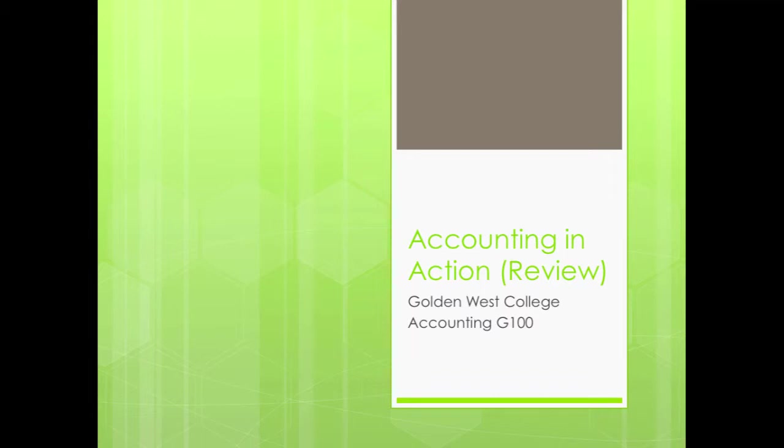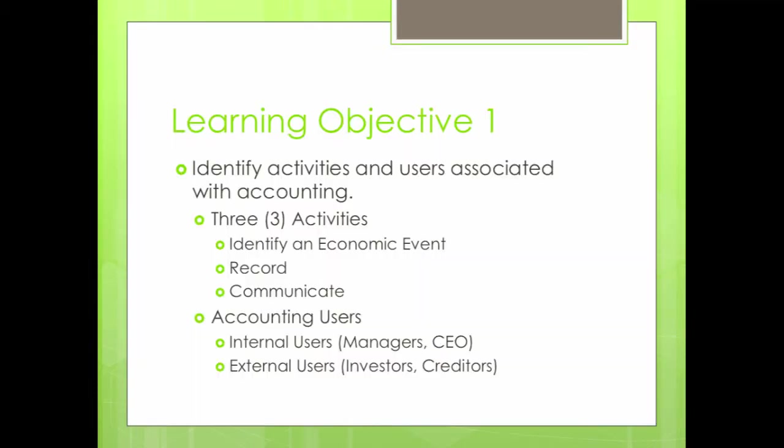Let's begin by briefly reviewing what was covered in Chapter 1, which was accounting in action. The first objective covered was to identify the activities related to the accounting process, which were three: identify an economic event, record the event, and communicate the event. Remember that there are two types of accounting users — internal users such as managers and CEOs, and external users such as investors and creditors.